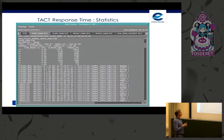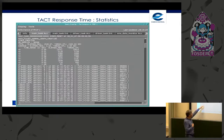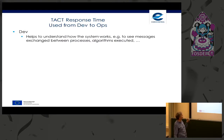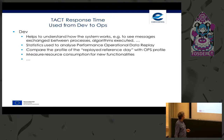Statistics are maintained: number of measurements, total time spent, elapsed and thread CPU, averages, a histogram of the distribution, and the N worst cases. In case something is really abnormal, it will appear in this data structure. The tactical response time package is used from development to operations. During development, it helps understand how the system works — message exchange between processes, algorithms executed. Statistics are used to analyze performance replay: comparing the replay day profile with the ops profile, measuring resource consumption for new functionalities.